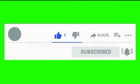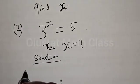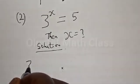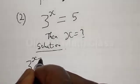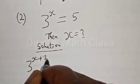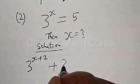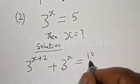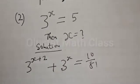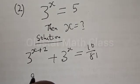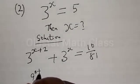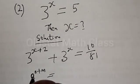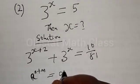From the first question we have: 3 raised to power x+2 plus 3 raised to power x equals 10 divided by 81. We know that a raised to power n+m is the same thing as a raised to power n multiplied by a raised to power m.